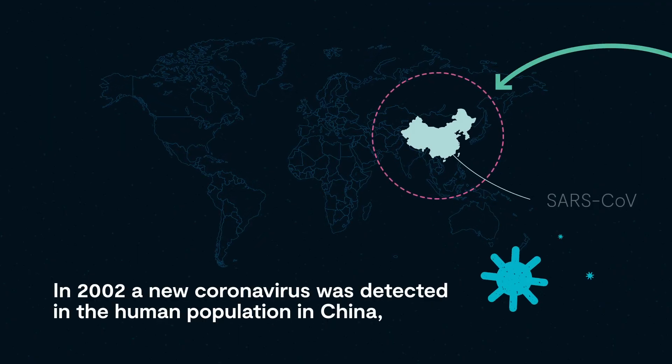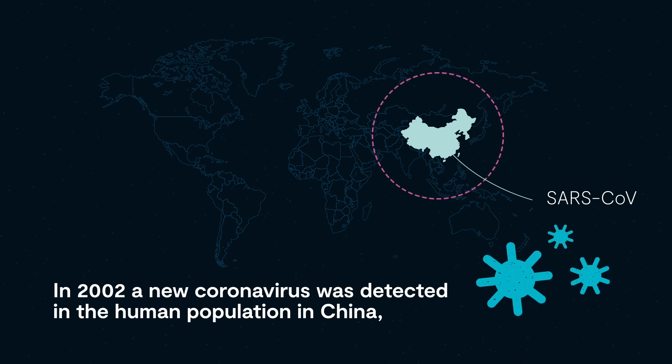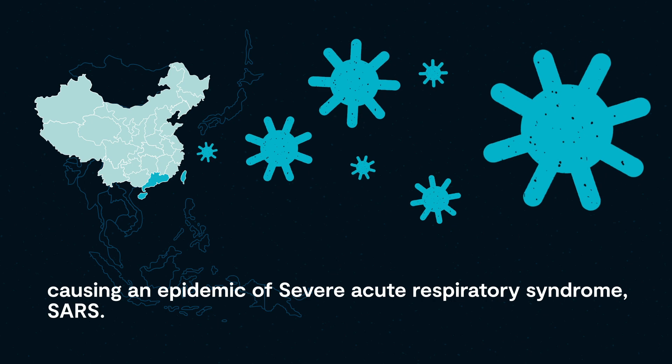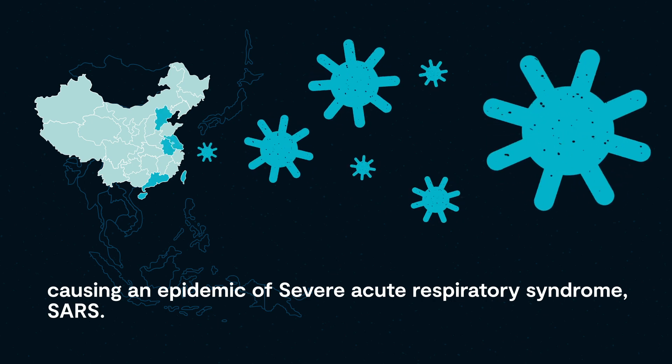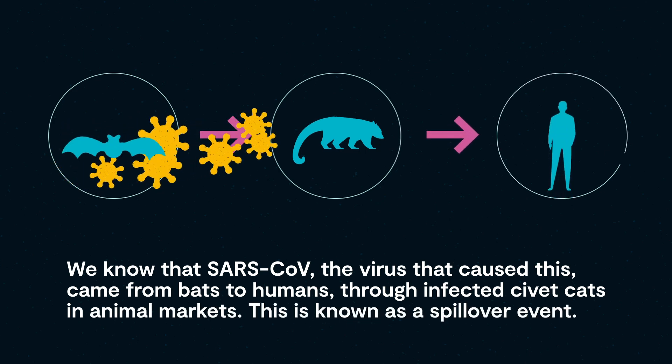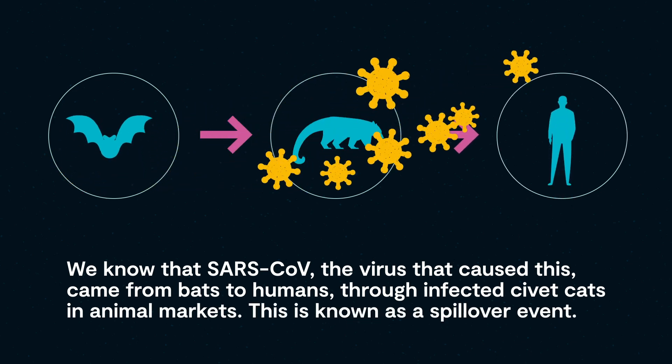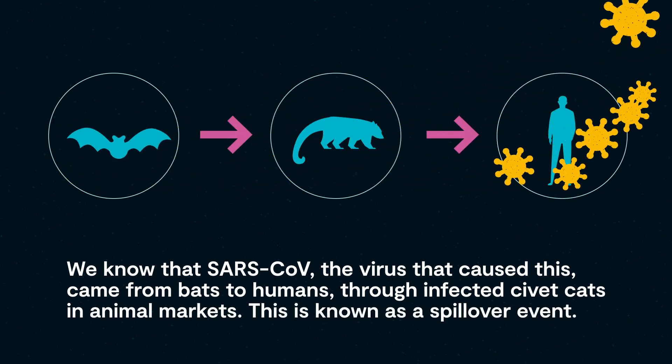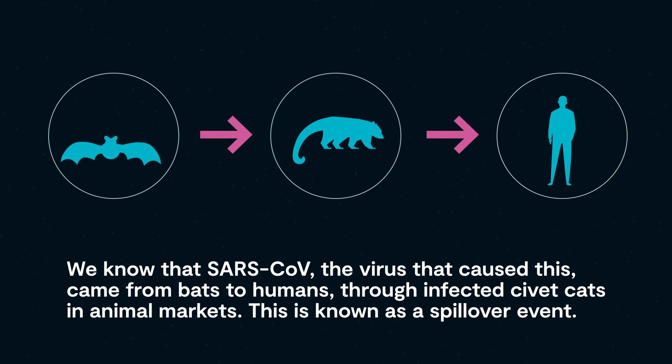In 2002, a new coronavirus was detected in the human population in China, causing an epidemic of severe acute respiratory syndrome, SARS. We know that SARS-CoV, the virus that caused this, came from bats to humans through infected civet cats in animal markets. This is known as a spillover event.